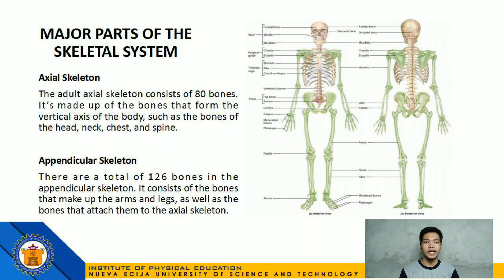As you can see in the picture, the brown-shaded region of the figure is what we call the axial skeleton. It consists of 80 bones that form the vertical axis of the body, such as the bones of the head, neck, chest, and spine. While the appendicular skeleton consists of a total of 126 bones — it consists of the bones that make up the arms and legs, as well as the bones that attach them to the axial skeleton.